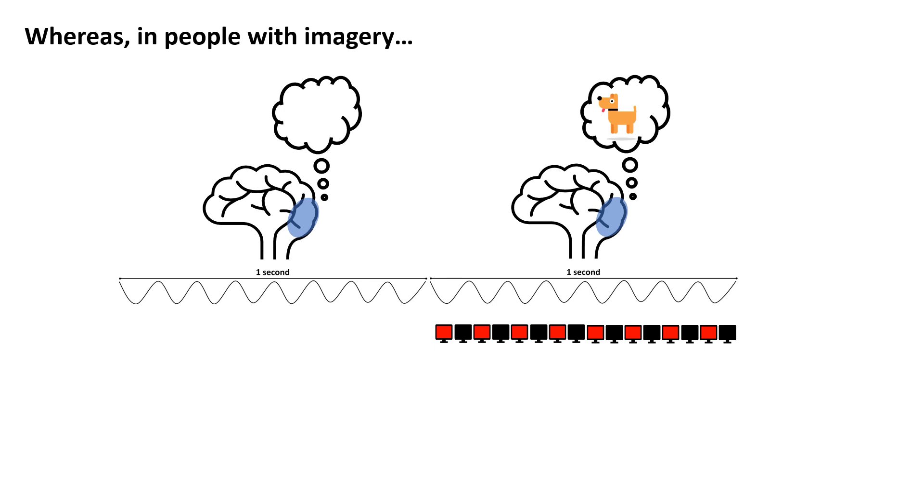Whereas, in people whose natural brain rhythms are slower, the rhythms that are induced by the interaction with the GANS flicker will be conducive to the experience of vivid and complex pseudo-hallucinations.